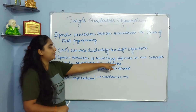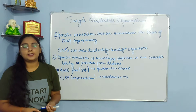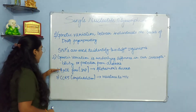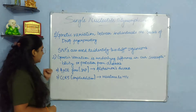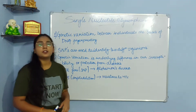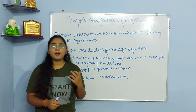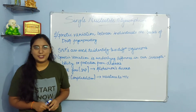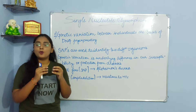SNPs are the underlying difference in our susceptibility or protection from diseases. A single nucleotide change can determine protection from a disease or cause a disease — for example, when the APOE gene has a single nucleotide change, it is called Alzheimer's disease. We know that every nucleotide has a function in the DNA.